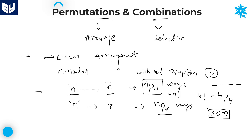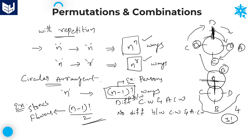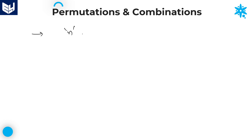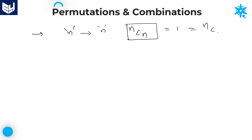This concludes permutations — we discussed linear as well as circular. Now I will explain combinations. If there are n members and I want to select all n members, that is possible in nCn ways. In combinations there is no condition of with or without repetition; it is about selection only. The value of nCn is equal to 1.